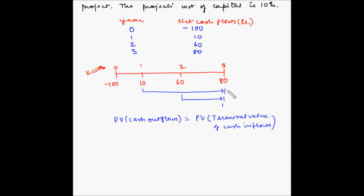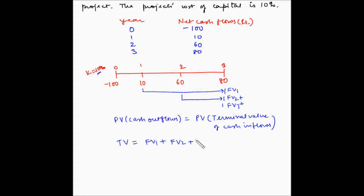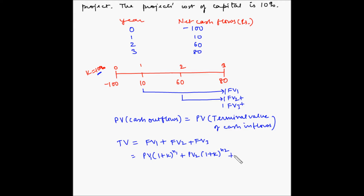For the 10 rupees, let's call this FV1. For the 60 rupees, let's call this FV2. And for the 80 rupees, let's call this FV3. The terminal value will be the addition of all three, and this future value will be found using the cost of capital. So TV, or terminal value, equals FV1 plus FV2 plus FV3, which equals PV1 × (1+K)^N1 + PV2 × (1+K)^N2 + PV3 × (1+K)^N3.